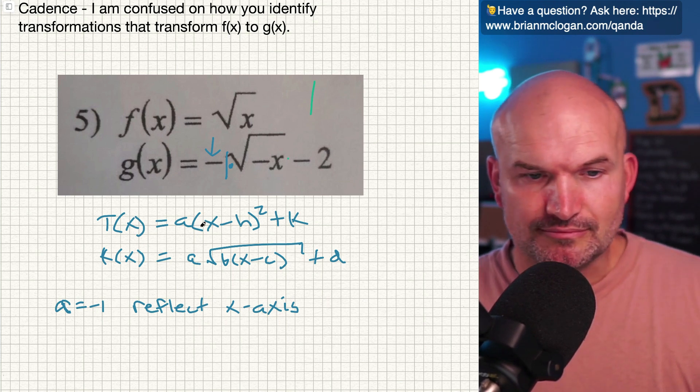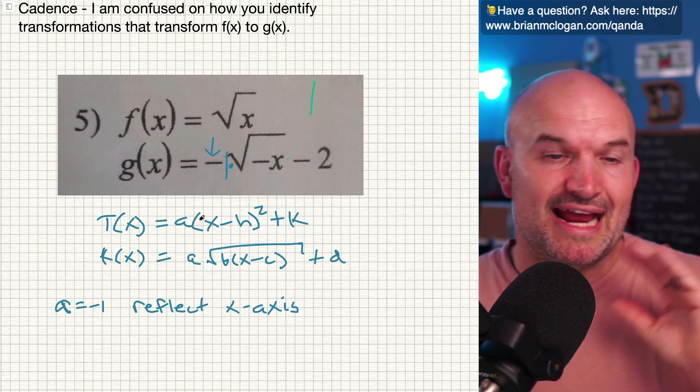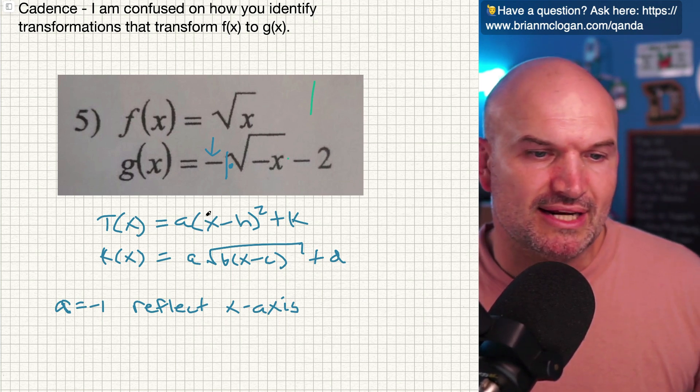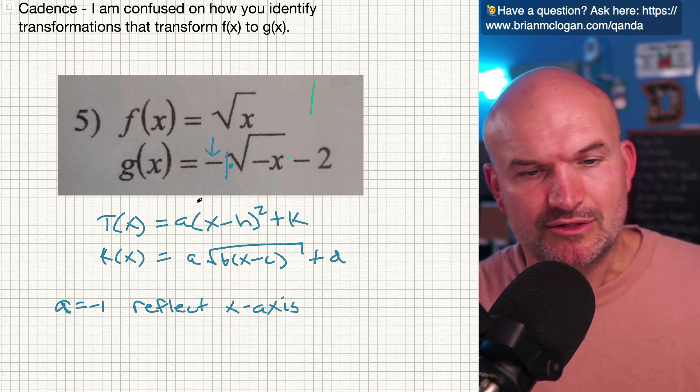The reason why we don't usually bring up b in terms of a quadratic is because that's a reflection about the y-axis, which a quadratic is an even function. So we know it's always going to be symmetrical. So it's not going to impact the graph.